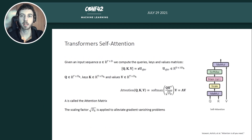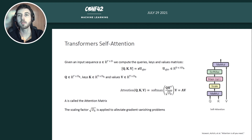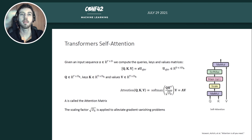Self-attention relates different positions of a sequence to compute a new representation of that sequence. We feed it a sequence Z of size T and dimensionality D, and compute three matrices — queries, keys, and values — by multiplying the input with a matrix U_QKV and slicing along the last dimension. Next we compute the dot product between queries and keys, divide by a scaling factor to alleviate vanishing gradient problems, and apply softmax row-wise. This produces an attention matrix of size T×T, quadratic in the input sequence size — one of the bottlenecks of the transformer. We then multiply by the value matrix V to retrieve the final computation.